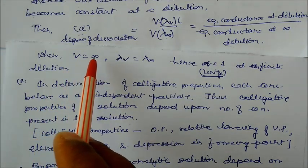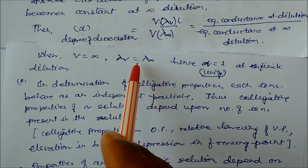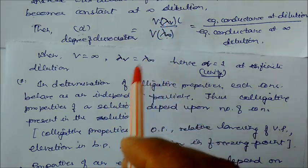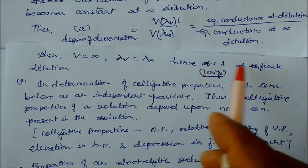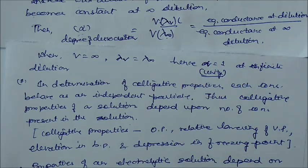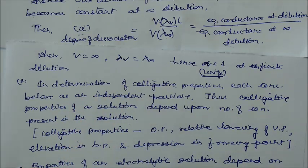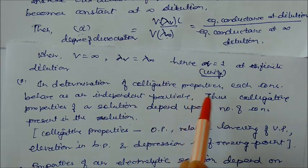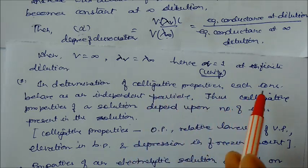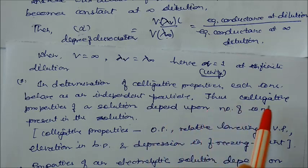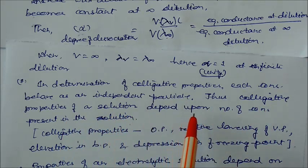When volume is infinite, conductance at dilution becomes equal to conductance at infinite dilution, both cancel, and alpha equals 1. The postulates also state that colligative properties are determined by the ions, each behaving as an independent particle. Thus, colligative properties of the solution depend upon the number of ions present in solution.